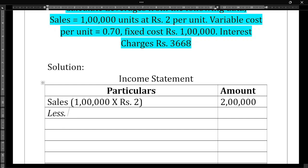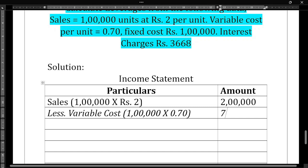Next, we need to calculate the variable cost. Total units sold is 1 lakh, multiplied by variable cost per unit of 0.70 rupees, so we get a total variable cost of 70,000 rupees.